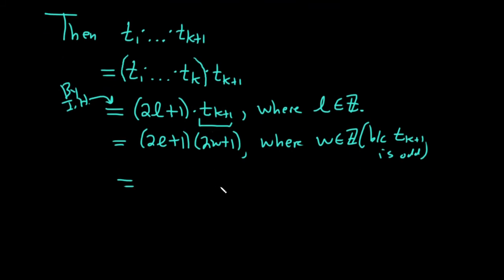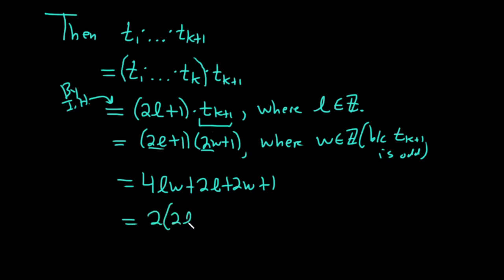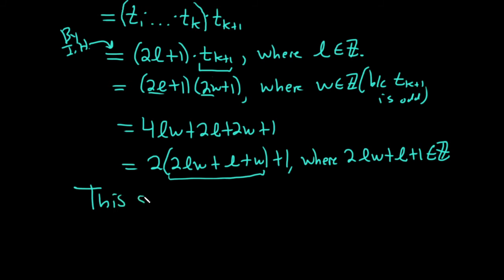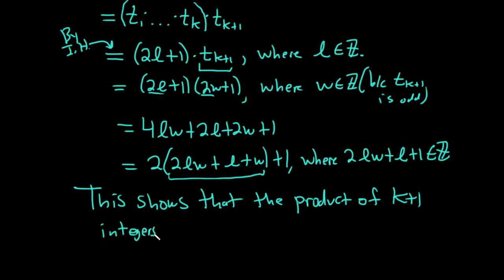Then we can multiply this out using the same reasoning as in the base case: 2l times 2w is 4lw, 2l times 1 is 2l, 1 times 2w is 2w, 1 times 1 is 1. This gives 2(2lw + l + w) + 1, where the piece in parentheses is an integer. So we've shown that the product of k+1 integers is equal to 2 times an integer plus 1 — that's precisely what it means for it to be odd. This shows the product of k+1 integers is odd.